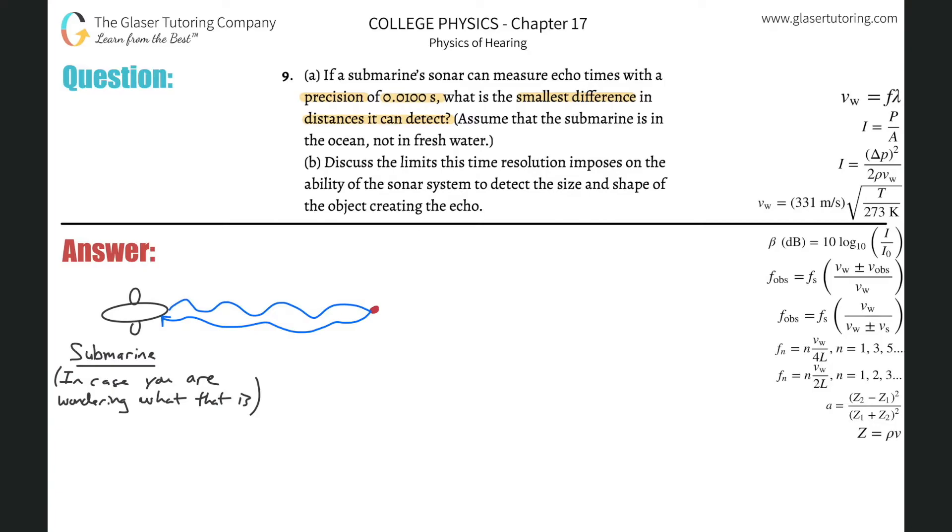However, the measuring devices are not accurate to an infinite degree. So the time difference over which the submarine can detect an object, or the time difference in which it can register the sonar coming back, has essentially a variance of 0.01 seconds.